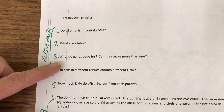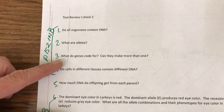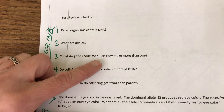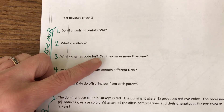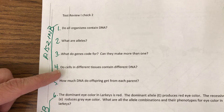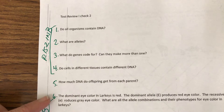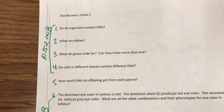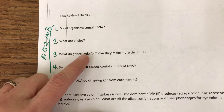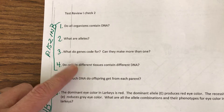Question number three: what do genes code for and can they make more than one? Genes code for proteins — the genes tell the cell to create specific proteins and they make proteins over and over again, so yes they can make more than one. Question number four: do cells in different tissues — like muscle tissue, eye tissue, etc. — contain different DNA? And the answer is no. All cells contain the same DNA; it just depends on what kind of proteins the genes tell them to make, which tells them what kind of cell they're going to be and what their job is going to be.